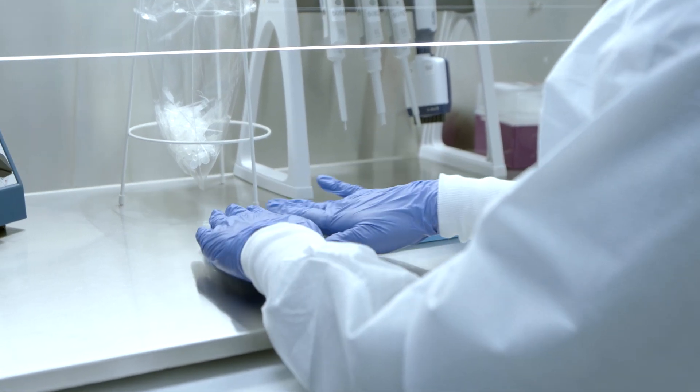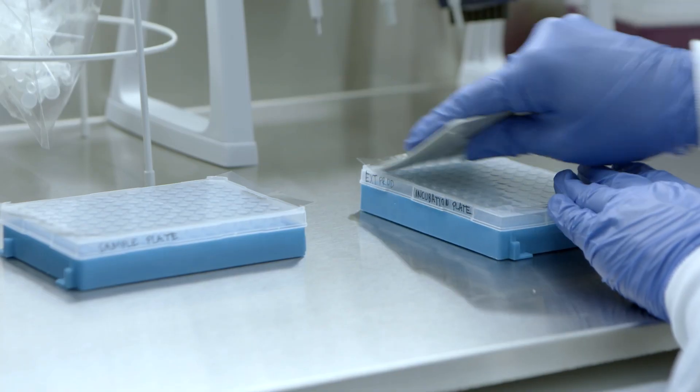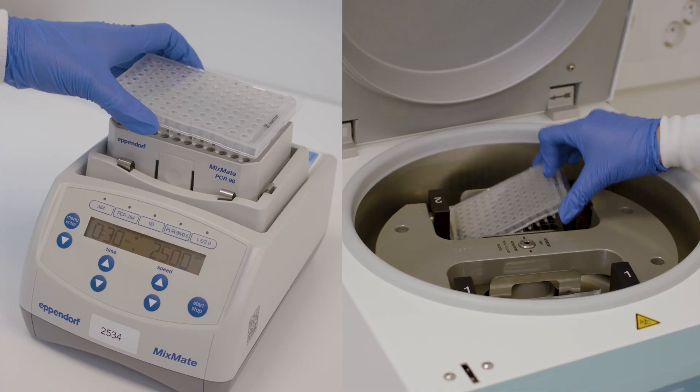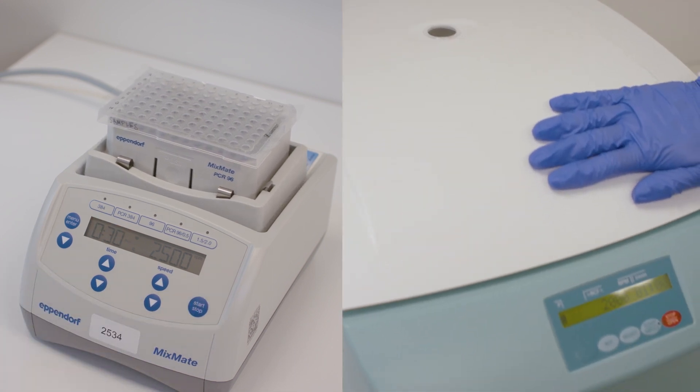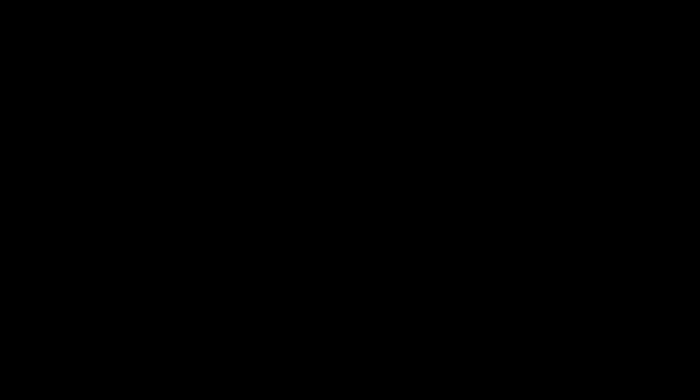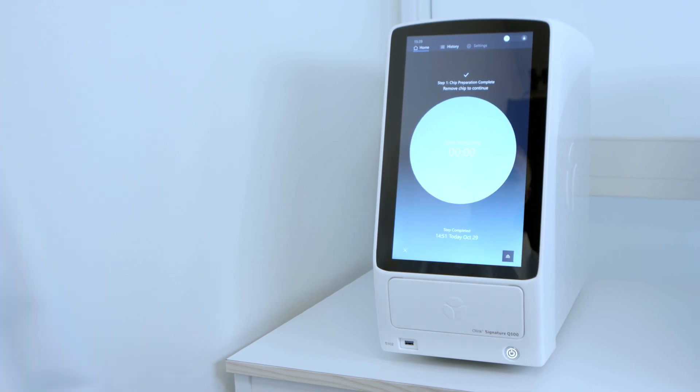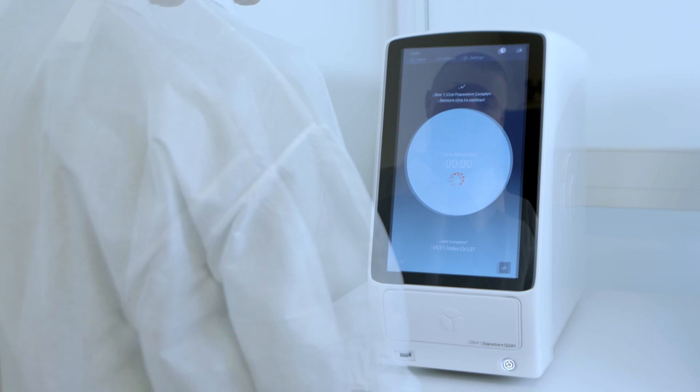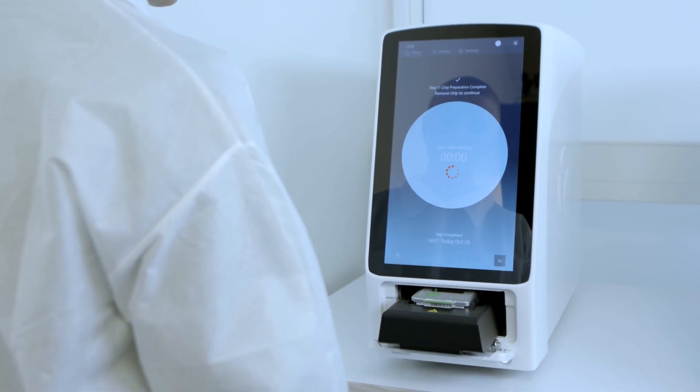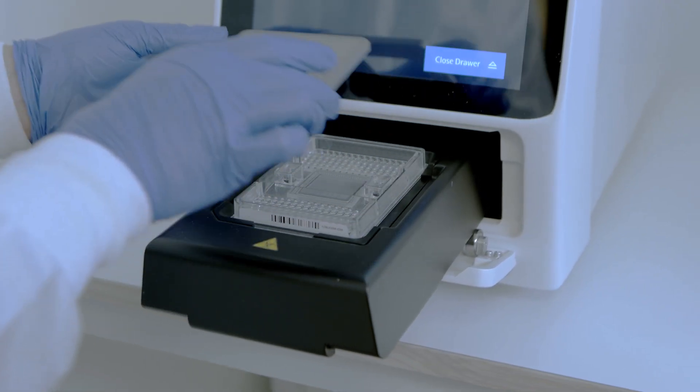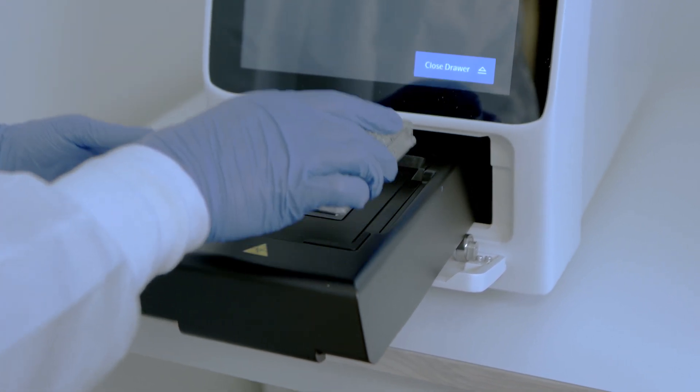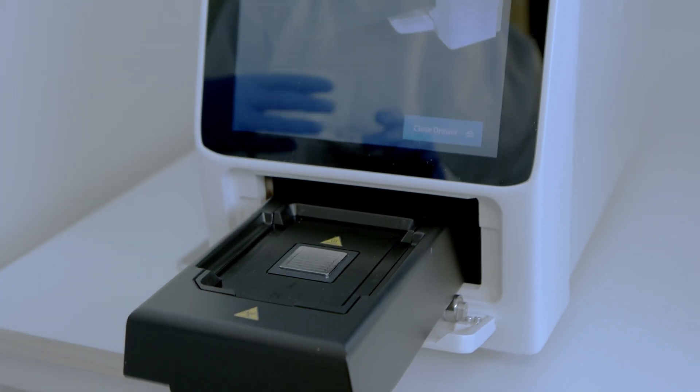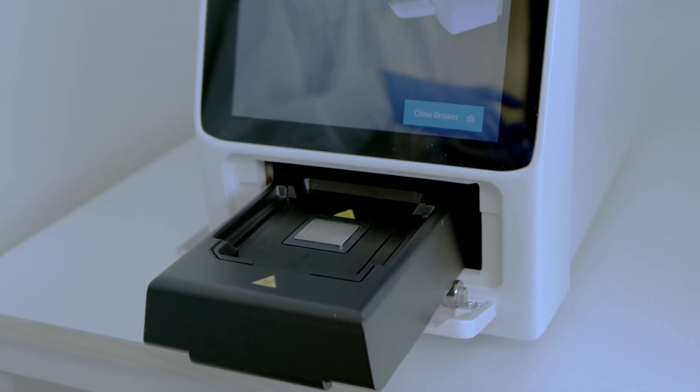Seal both the sample plate and the incubation plate with adhesive plastic film. Vortex and spin down the sample plate before proceeding. The chip preparation is now complete and the chip preparation complete screen is displayed. Tap the eject symbol to open the shuttle drawer and remove the interface plate and the IFC from the instrument. Tap close drawer. The shuttle drawer closes.